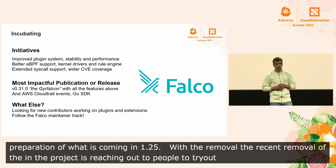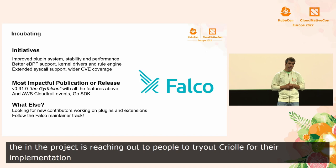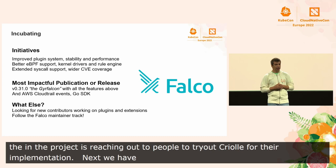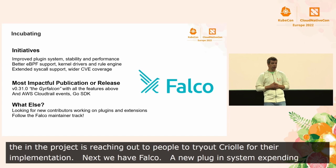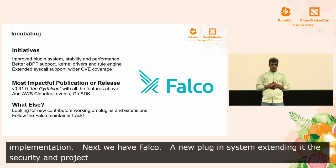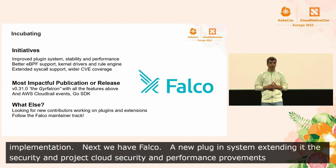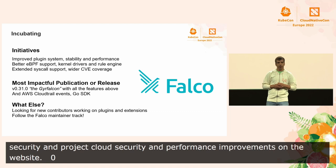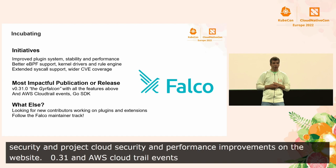Next we have Falco, which makes it really easy to consume kernel events integrating with the cloud-native stack. It also provides a very rich set of security rules built for Kubernetes, Linux, and cloud-native. News includes a new plugin system extending it beyond runtime security and gearing the project towards cloud security, plus big stability and performance improvements that also give it better eBPF support. Release 0.31 adds all of this plus AWS CloudTrail events and a Go SDK. Falco calls for new contributors to extend the plugins and integration ecosystem.